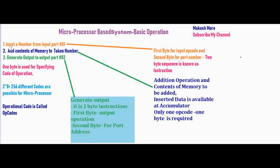Now we have an example of basic operations with a microprocessor-based system. The program is: first, input a number from input port number 01. Second, add the contents of memory to the taken number. So by these two instructions — input a number from input port 1 and add the contents of memory to the taken number — we are adding two numbers together.